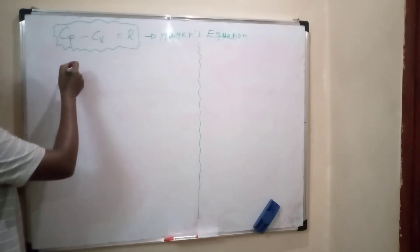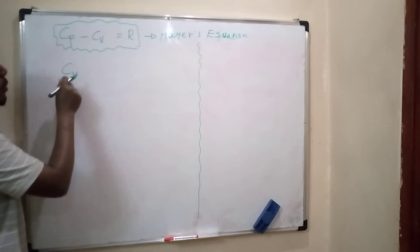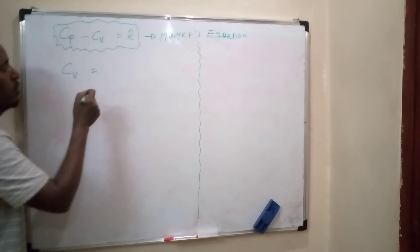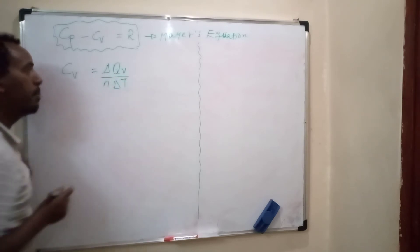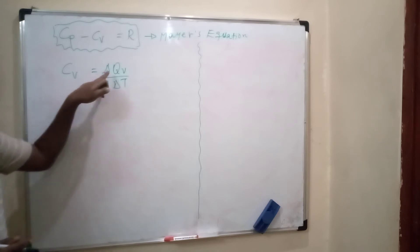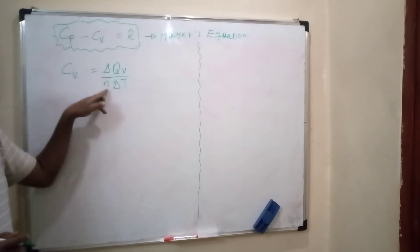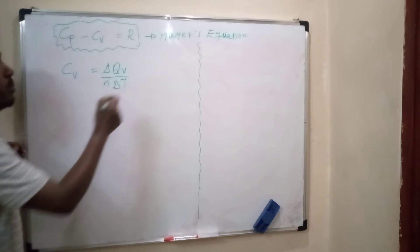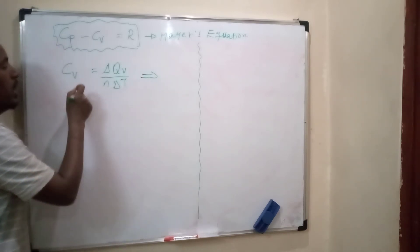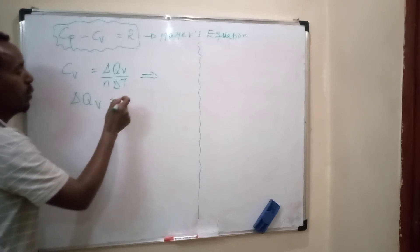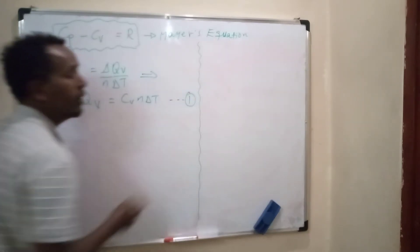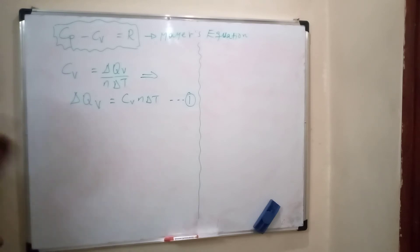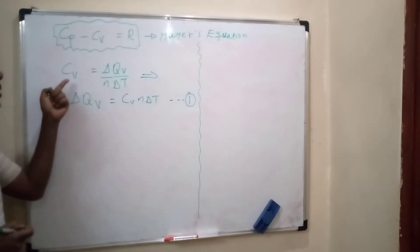Molar heat capacity at constant volume, symbolized by Cv, equals the change in heat at constant volume over the number of moles times change in temperature. That is, Cv = ΔQv / (n · ΔT). From this expression, we have ΔQv = Cv · n · ΔT. Take this as equation one.